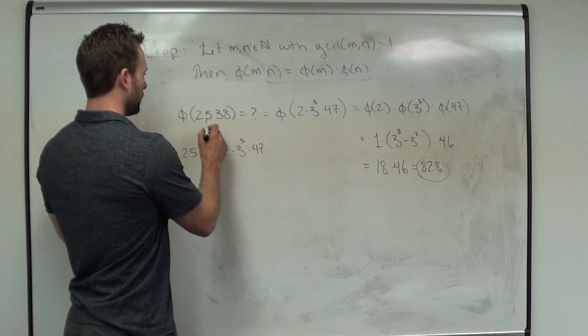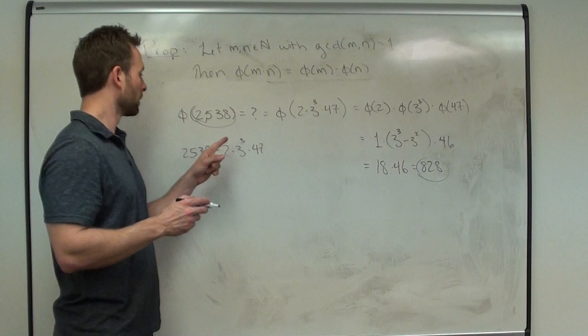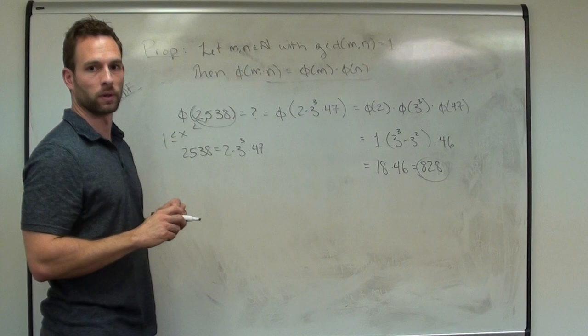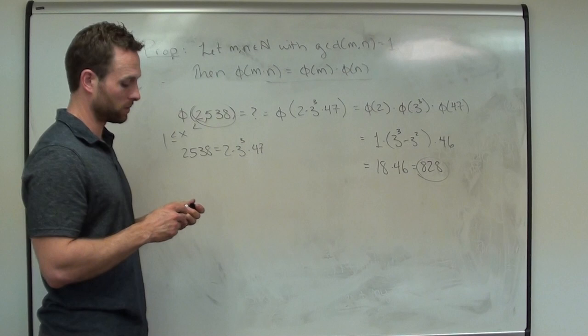That tells me for 2538, there are 828 numbers less than this guy and greater than 1 that are co-prime to it. We can do this easily now, as long as we know the prime factorization — not too bad. That is something really cool: phi is multiplicative as long as the inputs are co-prime.